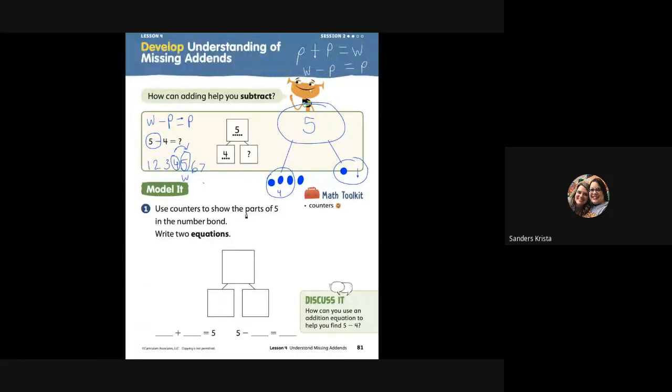So let's go over here. It says use counters to show parts of five in the number bond. Well, let's see. One, two, three, four, five. So we've got five dots right there. This is my whole. Two equations.